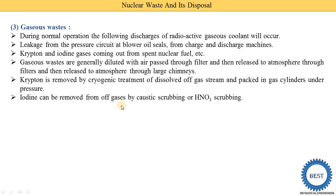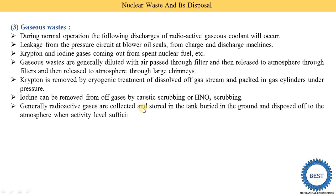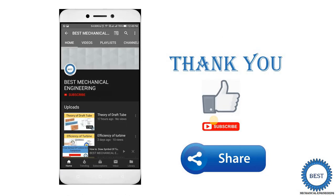Iodine can be removed from off-gases by caustic scrubbing or HNO3 scrubbing, using the scrubbing process to free the iodine gases from radioactive material. Generally, radioactive gases are collected and stored in tanks, then buried in the ground and disposed to the atmosphere when the activity level has sufficiently come down. Thank you for watching this video — if you learned something, please like the video, subscribe to the channel, and share with your friends.